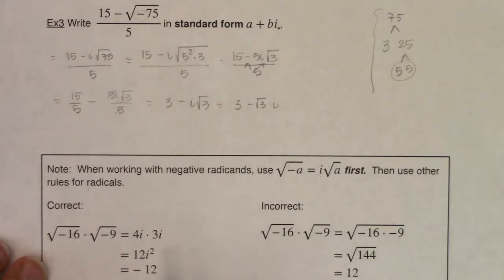So let me give you a compare and contrast of the correct way of handling a problem and the incorrect way. So if you look here we're starting with the square root of negative 16 times the square root of negative 9.